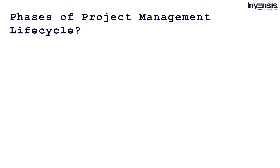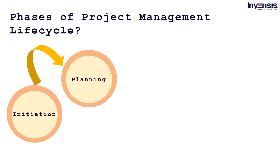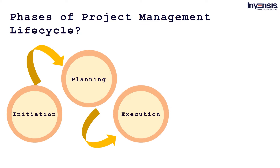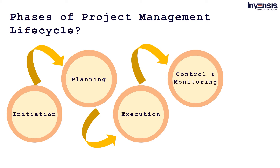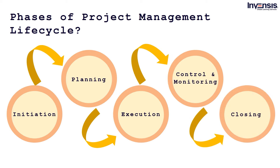The project management life cycle consists of the following phases to categorize and bundle similar processes: the Initiation phase, Planning phase, Execution phase, Control and Monitoring phase, and Closure. Let's dive deeper into each of these phases to understand how it works for a project.